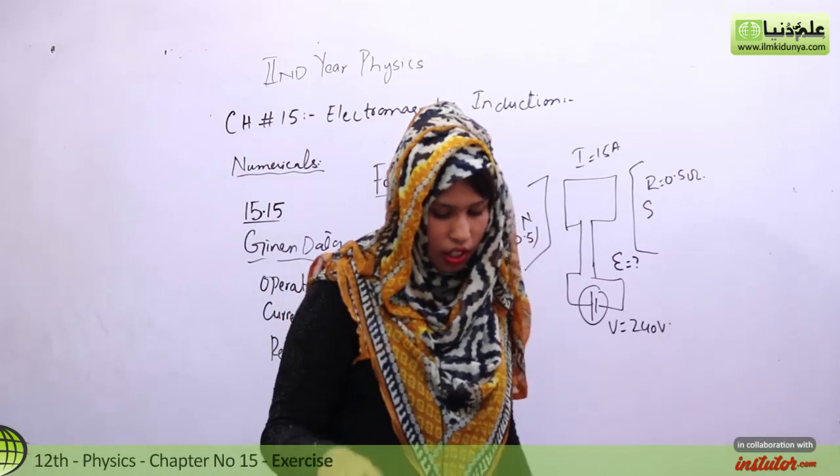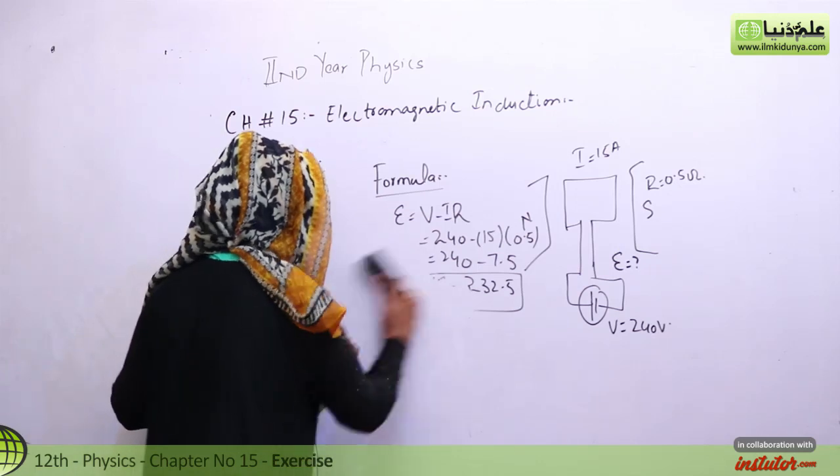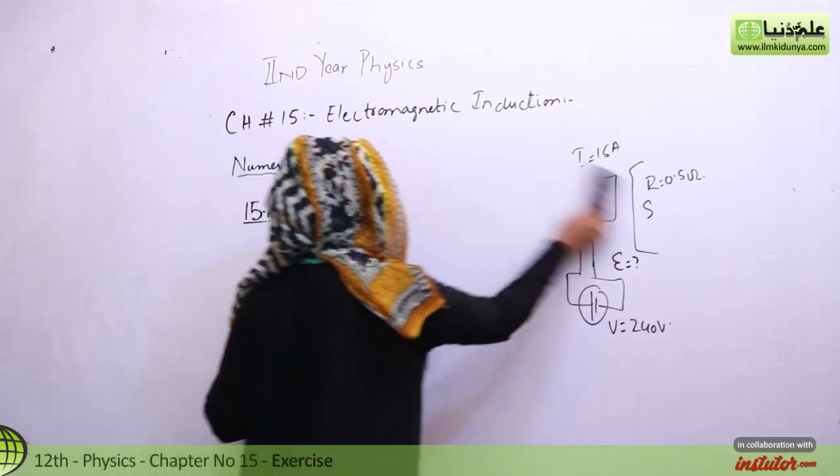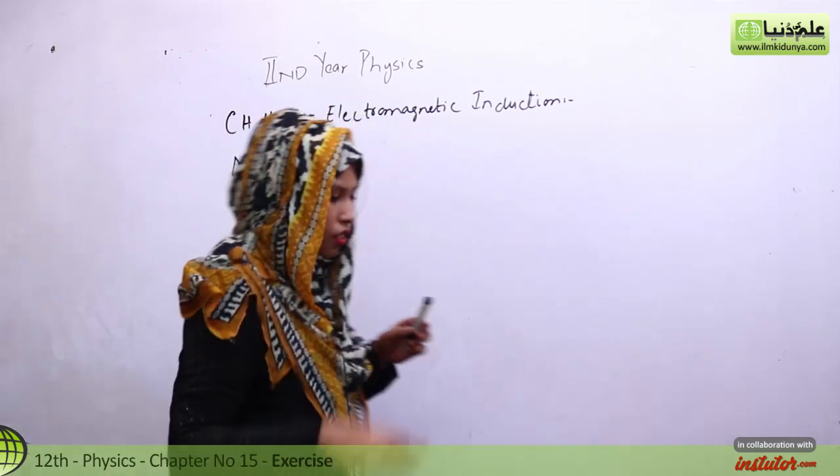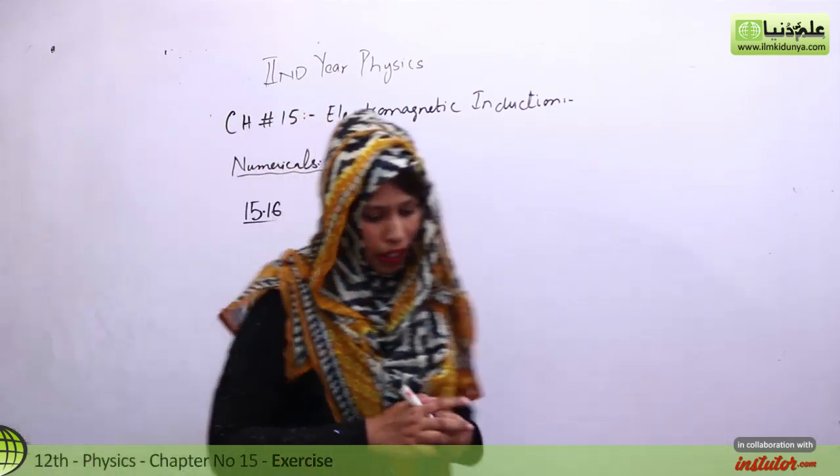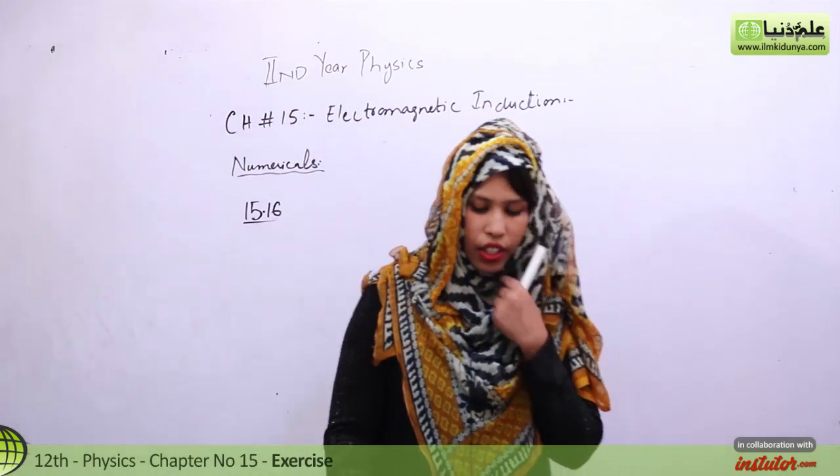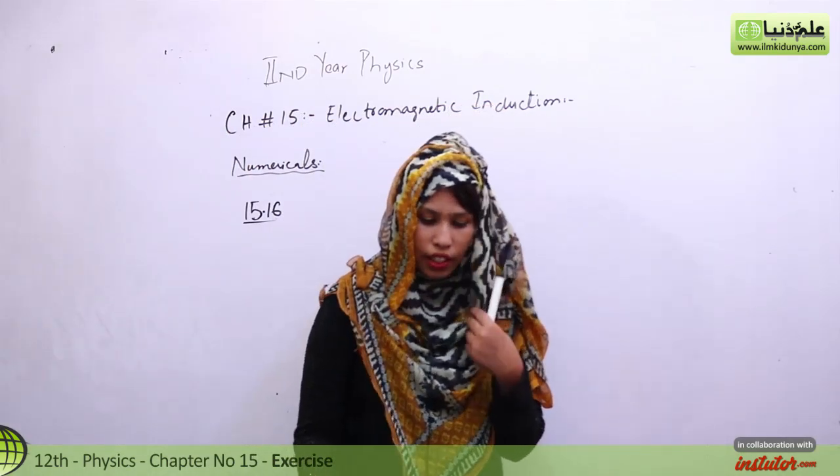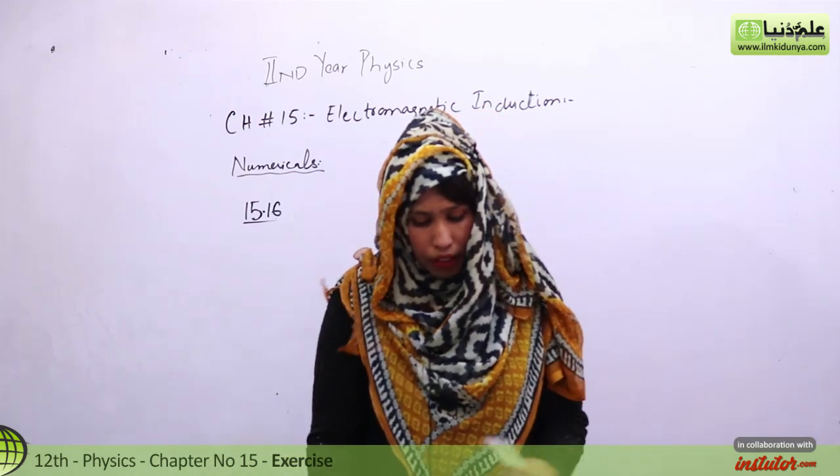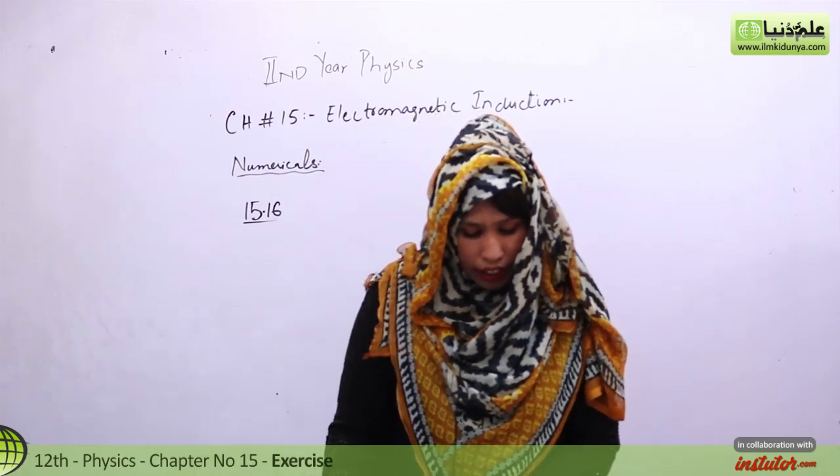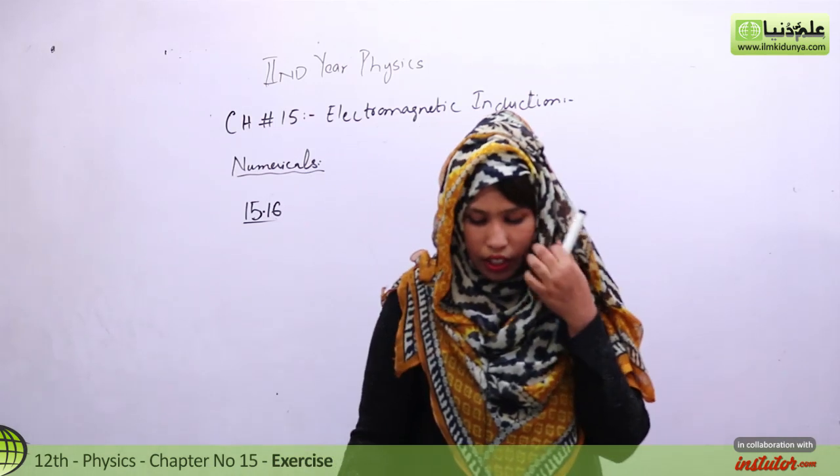This is our induced EMF value. So this was numerical number 15. Now let's go to numerical number 16. A copper ring has a radius of 4.0 cm and a resistance of 1.0 milli-ohm.